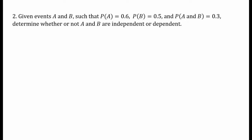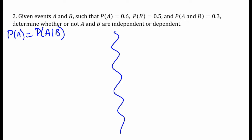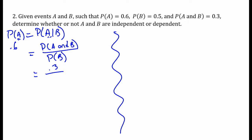There are two ways to do this. We can use the definition that the probability of A equals the probability of A given B, or the probability of B equals the probability of B given A — it doesn't matter. The plain probability should be the first thing in your conditional probability. The probability of A is 0.6. We need to figure out the probability of A given B, which is the intersection over the probability of B. So 0.3 over 0.5 equals 0.6.